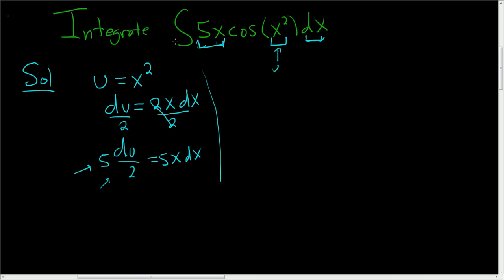So I'll call it i so I don't have to write it again. So i is equal to, well, 5x dx is 5 du over 2. So I'll pull the 5 halves out, 5 halves. Then we just end up with cosine u du.